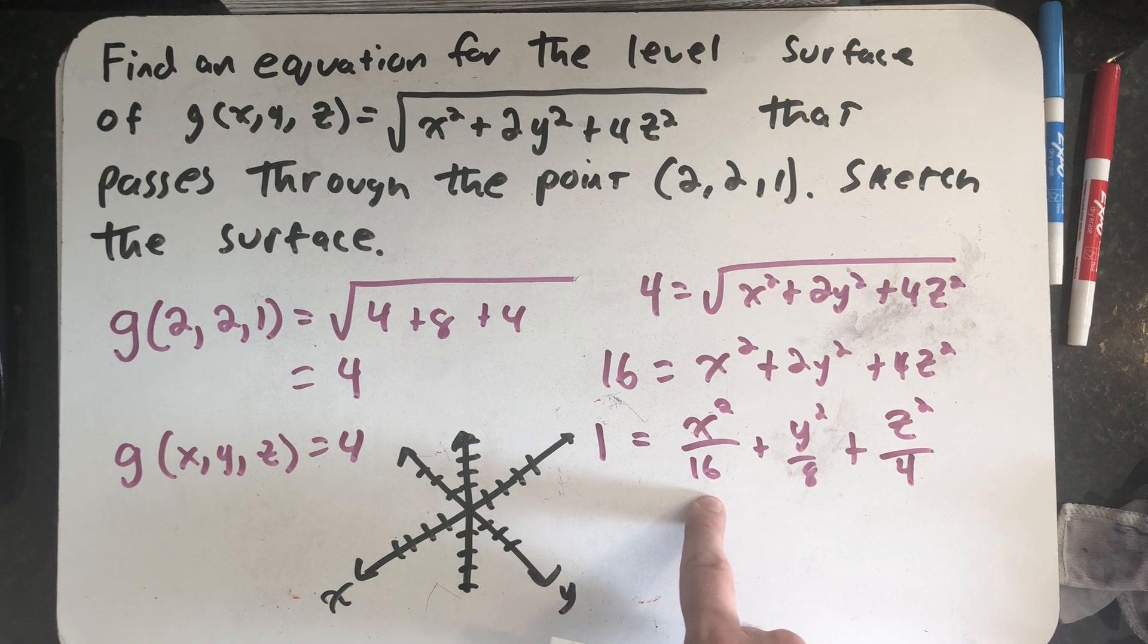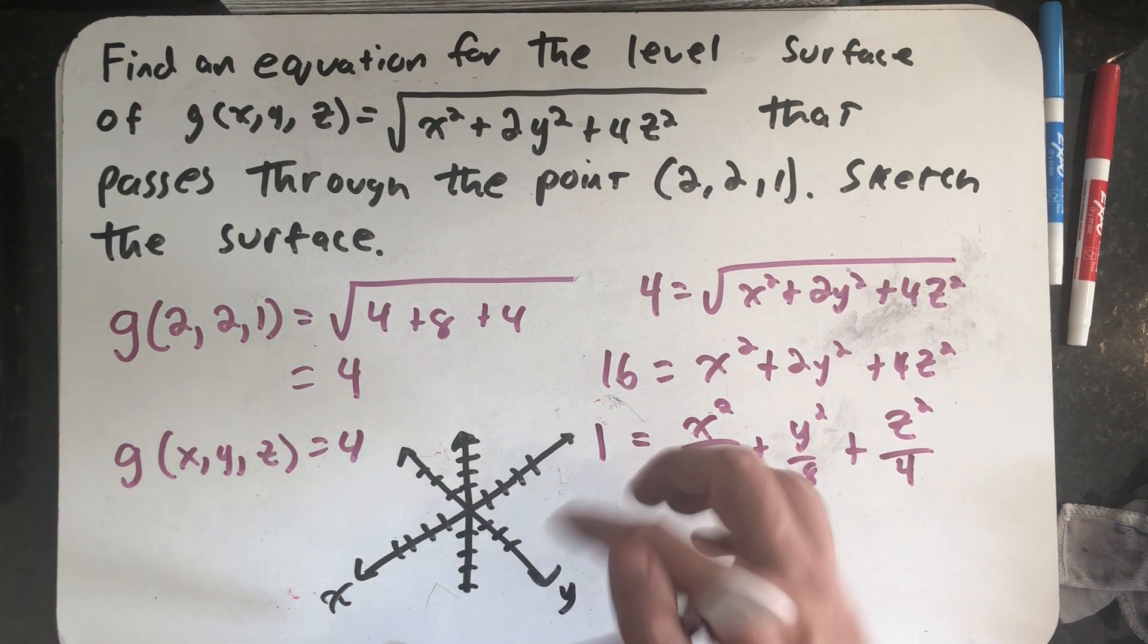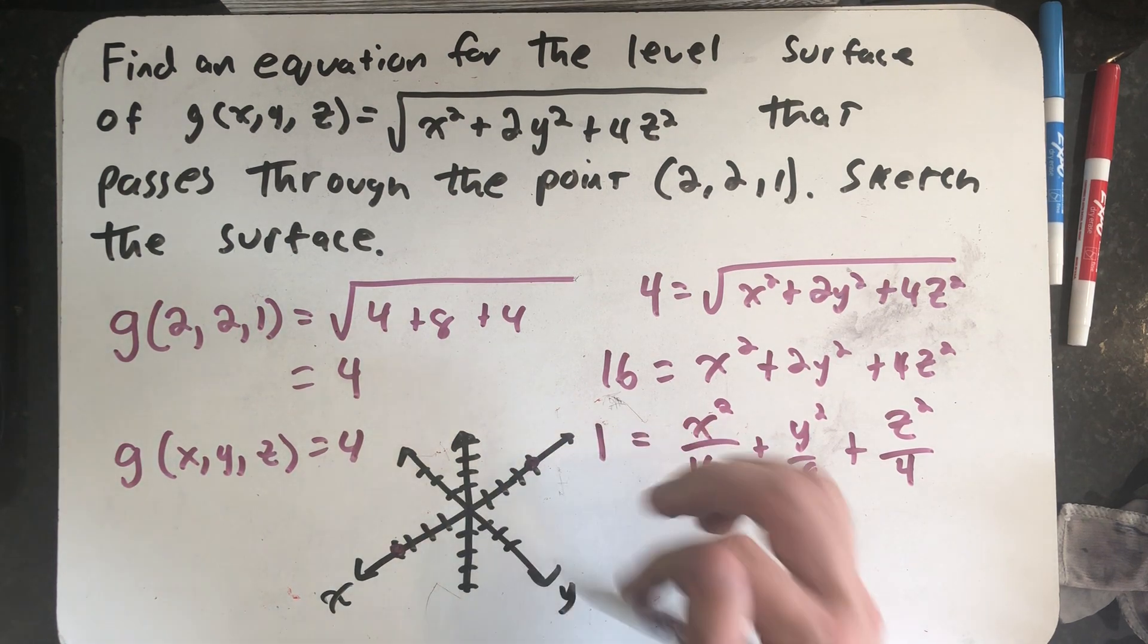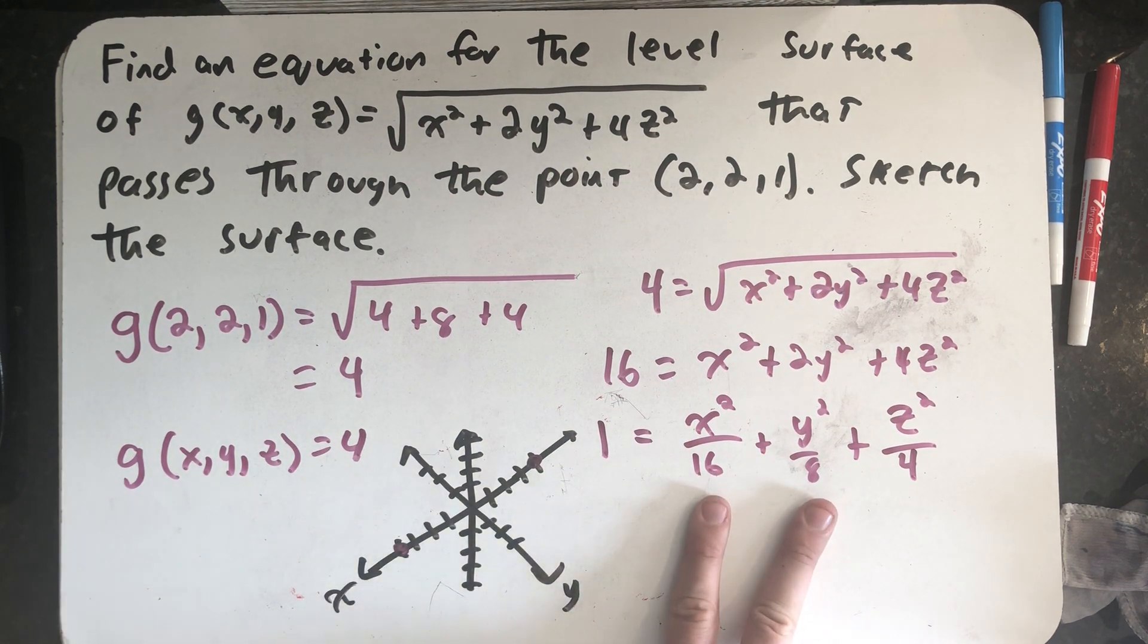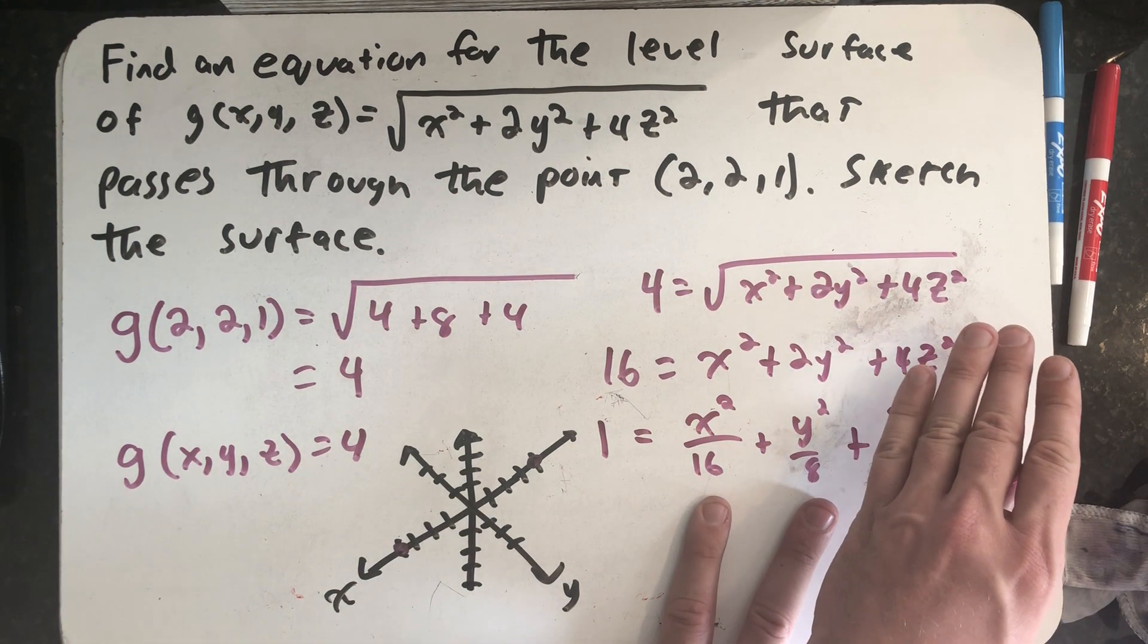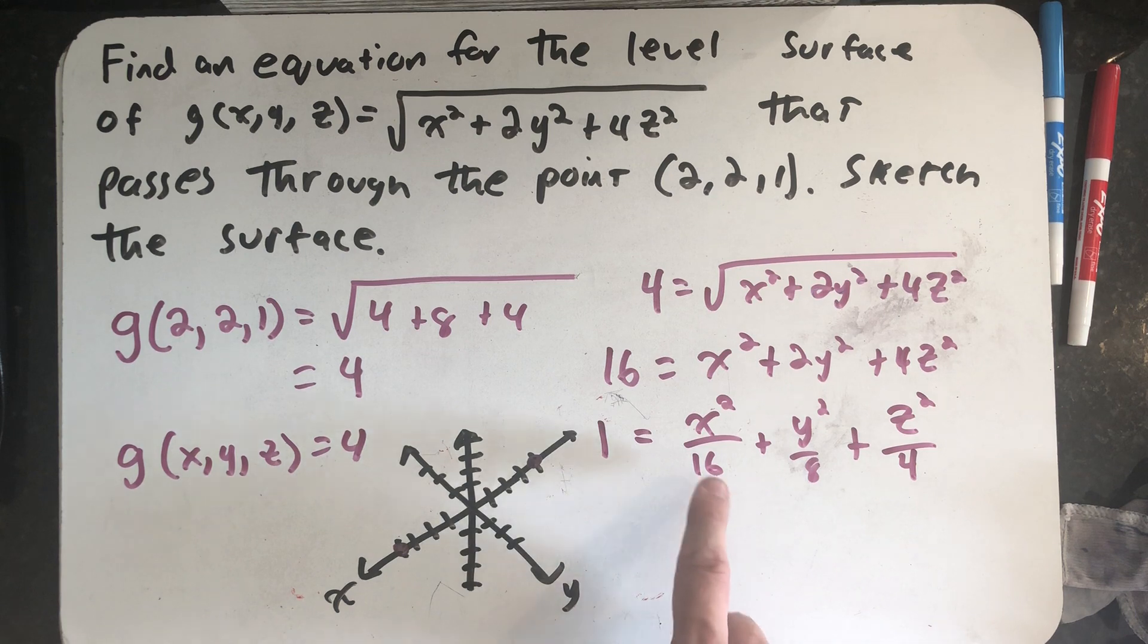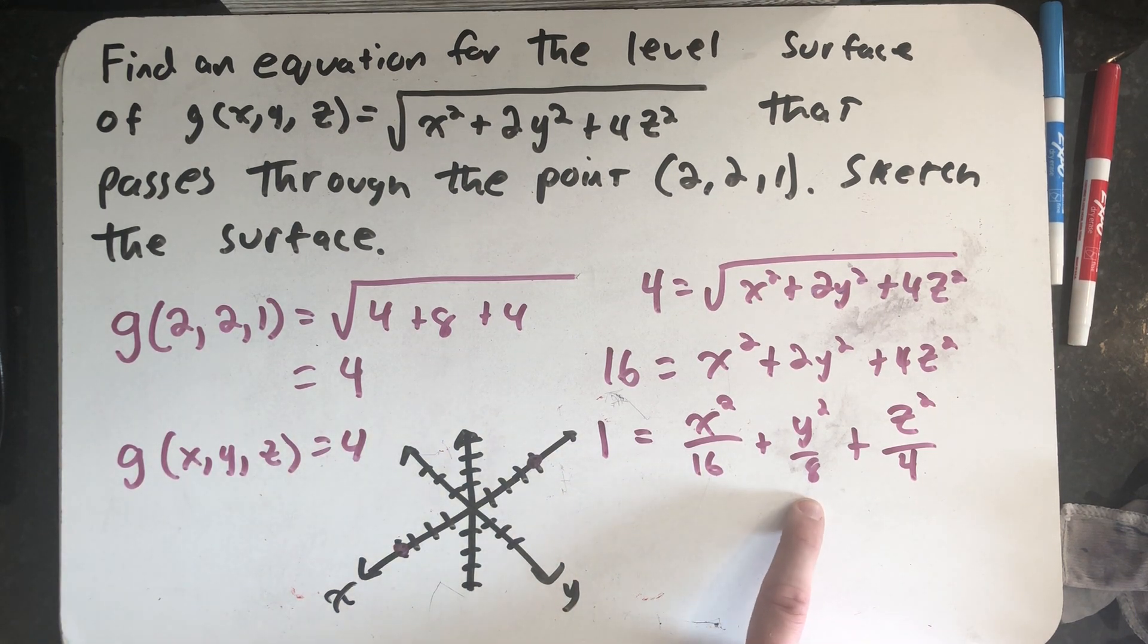All right, so in the x direction I need to go that way 4 and that way 4. If I thought about an ellipse, right, z equals 0, the ellipse in the xy plane would have a major axis that would have a length of 8 and a minor axis that would have a length of 4 times the square root of 2.